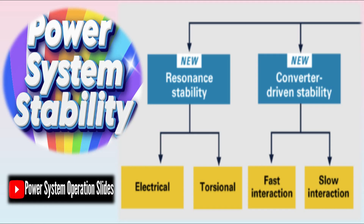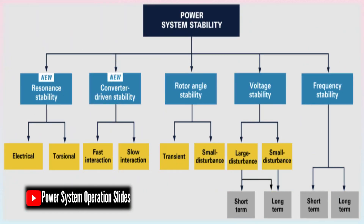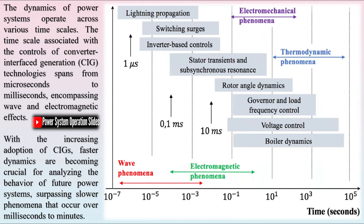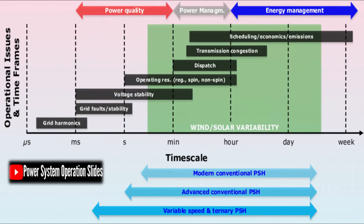Traditionally, focusing on the timescales of electromechanical transients allowed for significant simplifications in power system modeling and analysis. One major simplification was the assumption that voltage and current waveforms were primarily dominated by the system's fundamental frequency — 50 or 60 Hz. This led to the development of quasi-static phasor models, which relied on steady-state voltage and current representations. However, this approach primarily addressed slower dynamics while overlooking high-frequency dynamics, such as those stemming from the switching of power electronic devices.